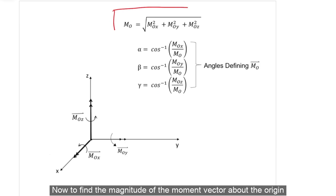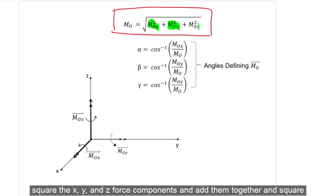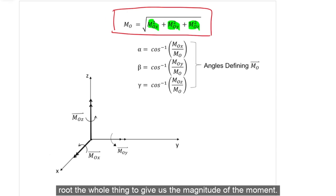Now, to find the magnitude of the moment vector about the origin, we can take the scalar components from the Cartesian form. Then we can square the x, y, and z force components and add them together and square root the whole thing to give us the magnitude of the moment.